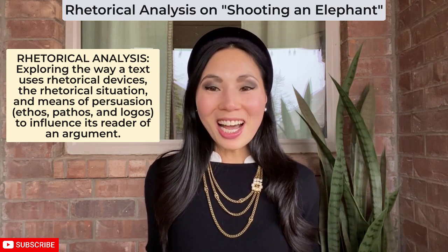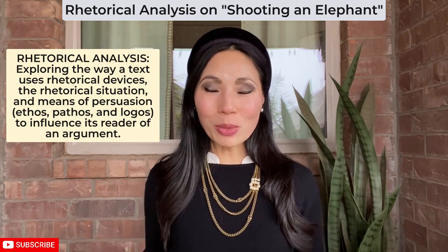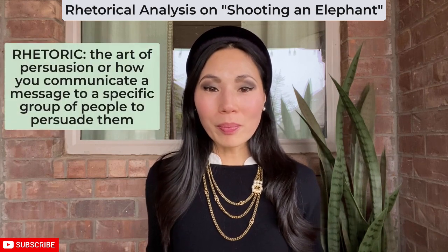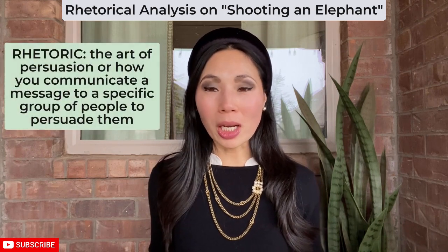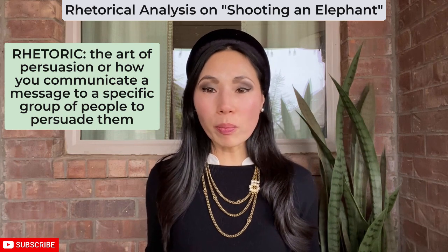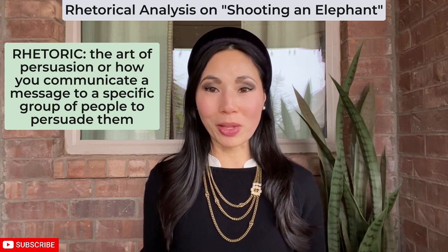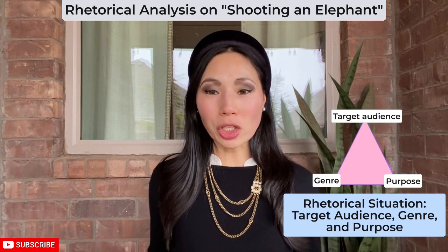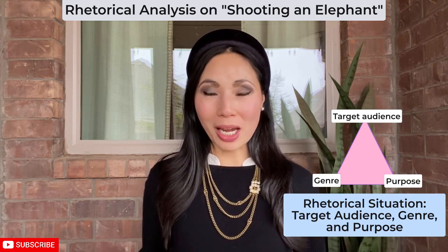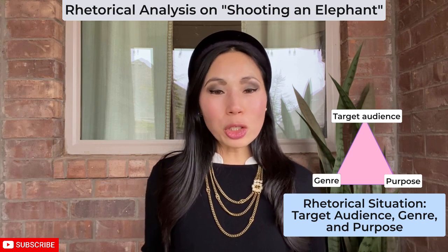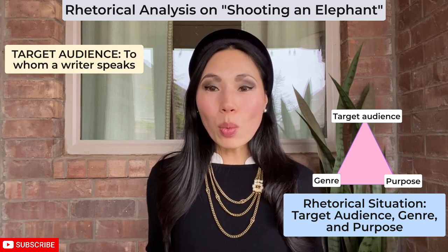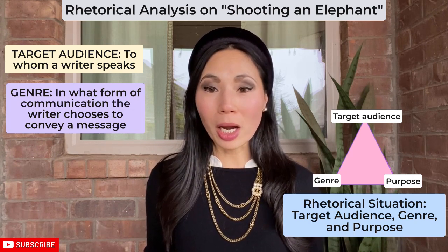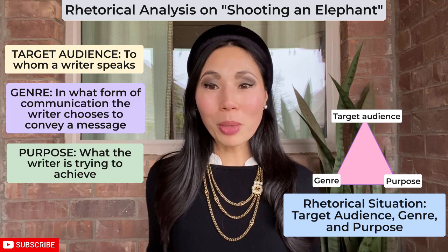So let's define all of these terms to make sure that we're all on the same page. Rhetoric is simply the art of persuasion — how you communicate a message to a specific group of people in order to persuade them of something. And rhetorical situation defines the context or the situation in which the writer communicates. It considers to whom a writer is speaking — the target audience — in what form of communication the writer chooses to convey a message — genre — and what the writer is trying to achieve — purpose.